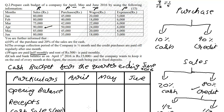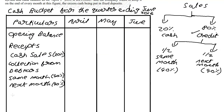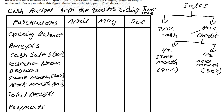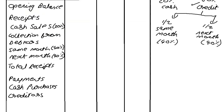Moving to payments: the first item is cash purchases at 10%. After that, we pay creditors at 90%, and they've stated it's one month credit — meaning purchases in one month are paid the following month.